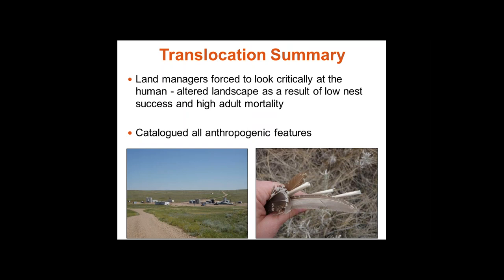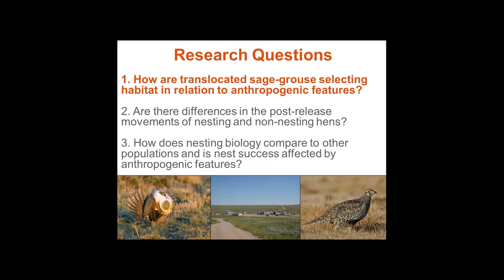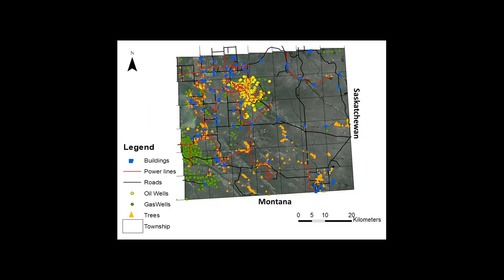As a result of poor nest success and high adult mortality, we were forced to look critically at the human-altered landscape. I catalogued all of the anthropogenic features in Alberta's sage-grouse range. My first research question was: how are translocated sage-grouse selecting habitat in relation to anthropogenic features? This is a map of the extreme southeast corner of Alberta showing the Saskatchewan border and Montana border — this is sage-grouse range in Alberta.